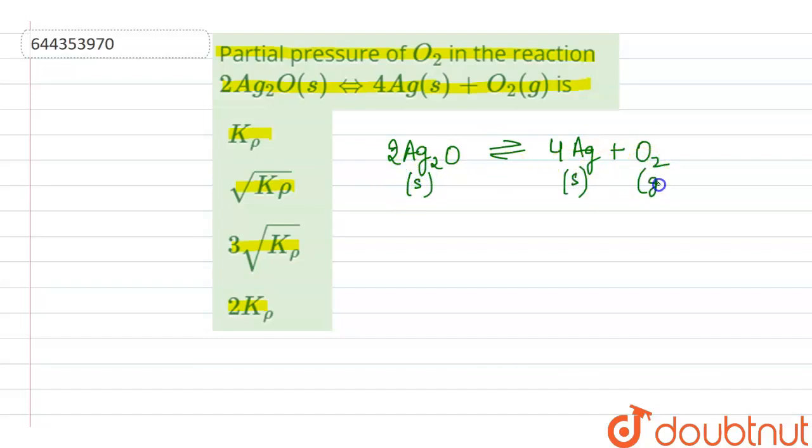Now as we know that Kp equals the constant of partial pressure, which equals partial pressure of oxygen times partial pressure of Ag to the power 4, as 4 is given here, divided by partial pressure of Ag2O square.